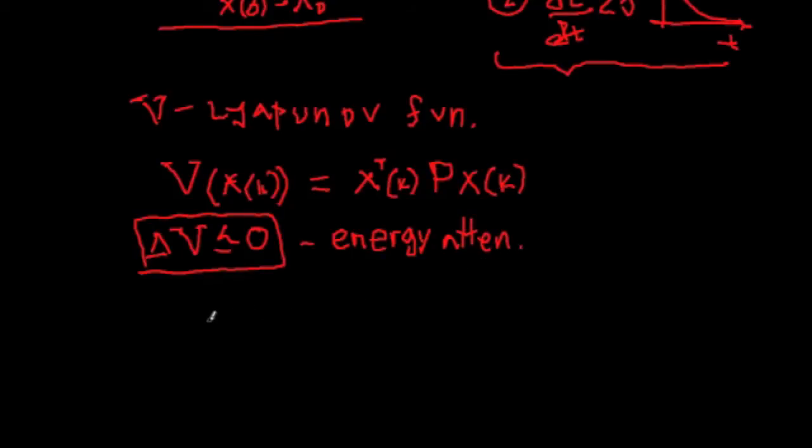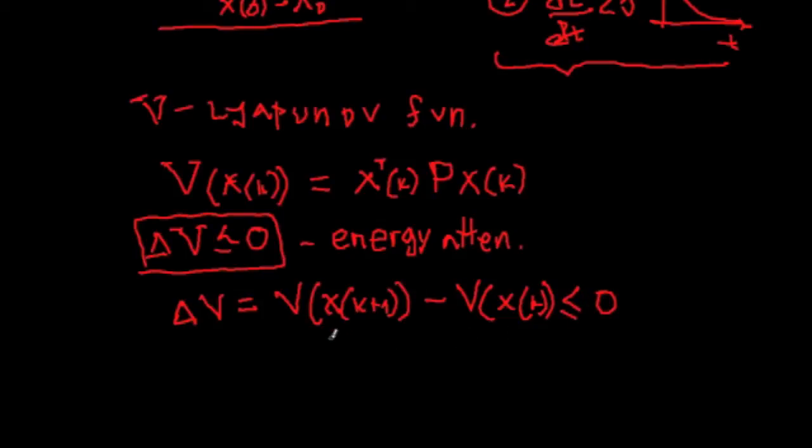Therefore, we have that ΔV is equal V(x(k+1)) at a time instance k+1 minus V(x(k)). That will imply that if an alternation happens, this is less than zero. This is the second condition.